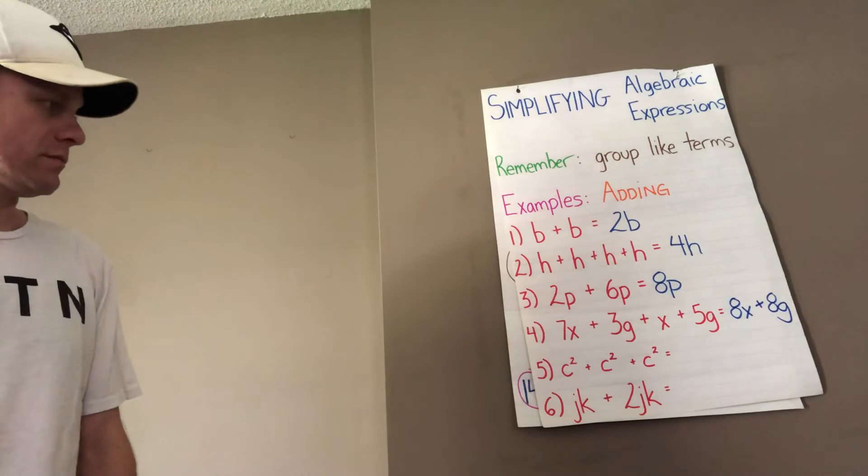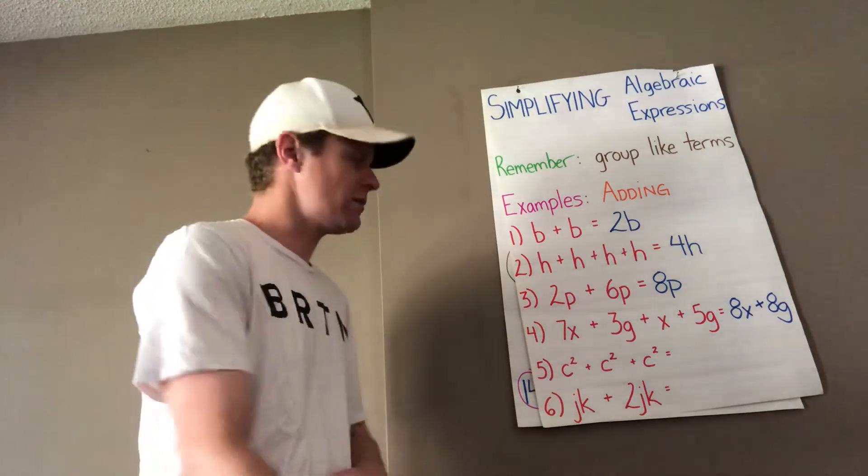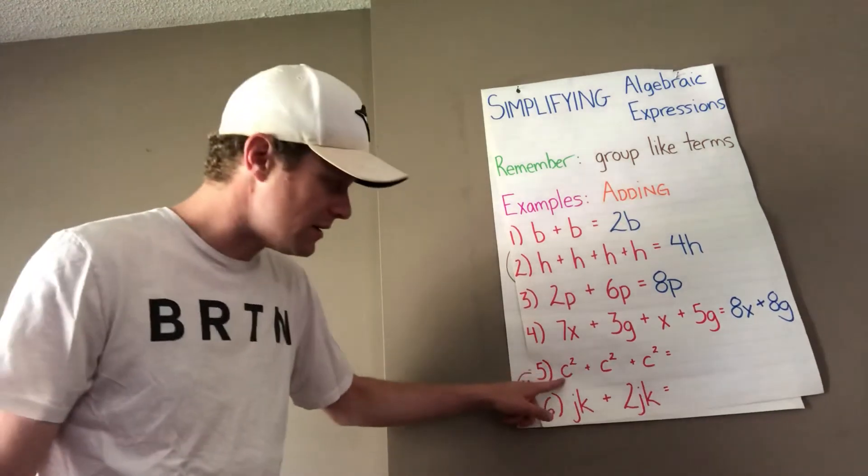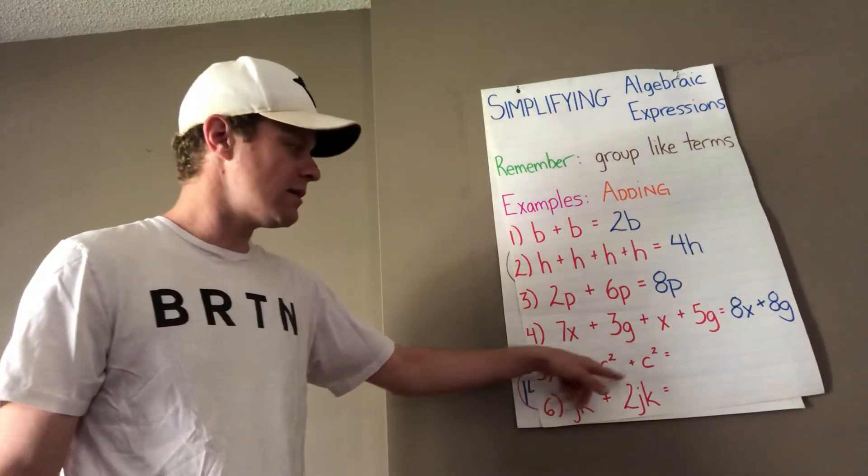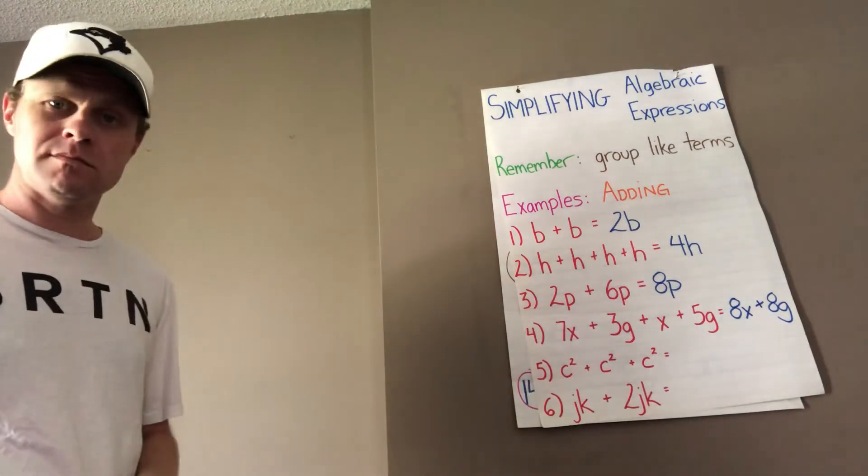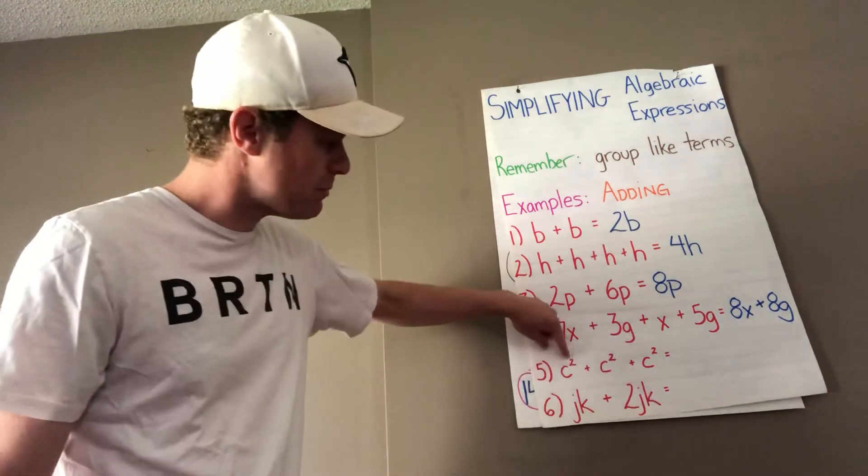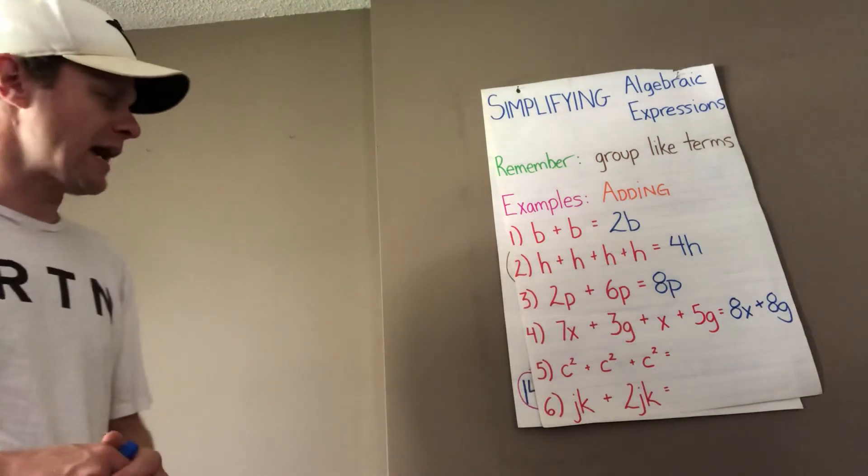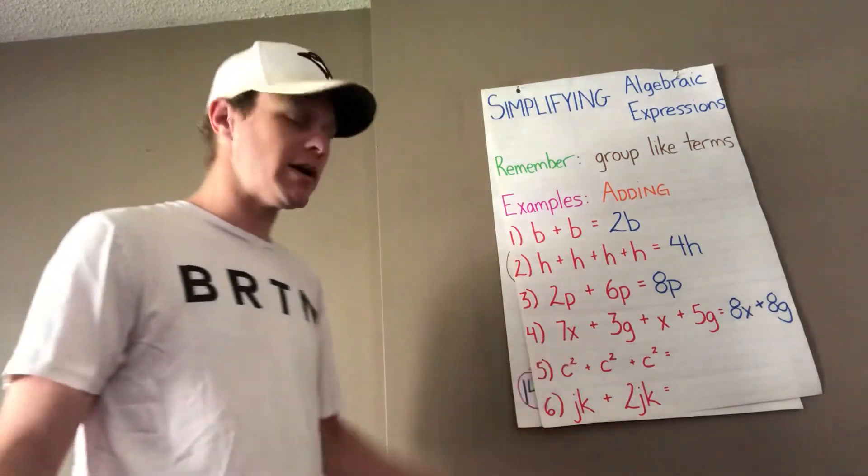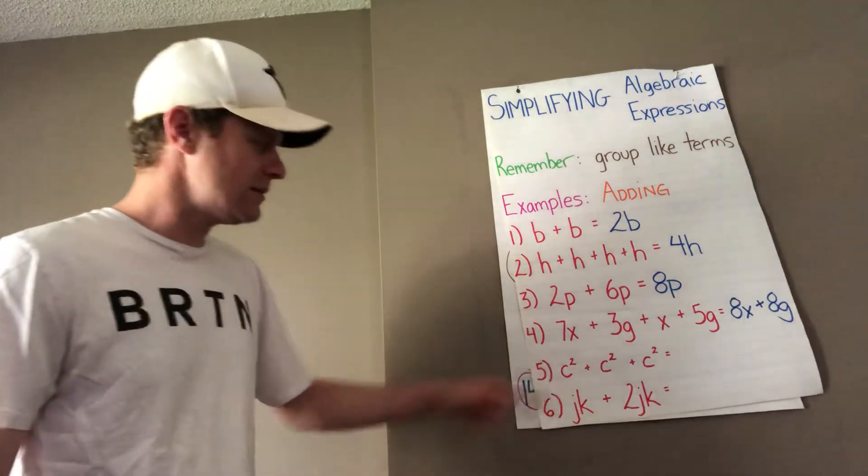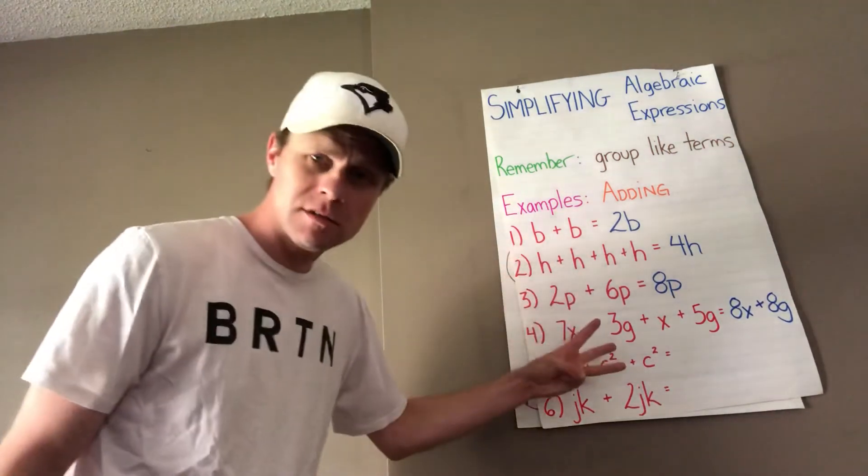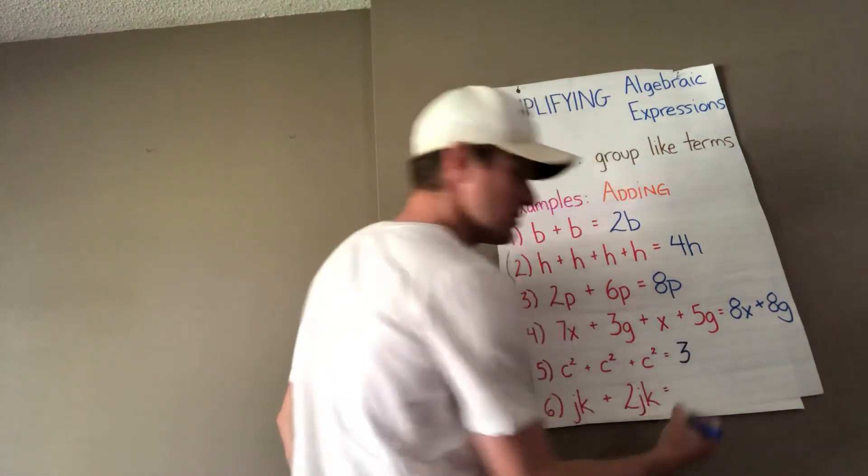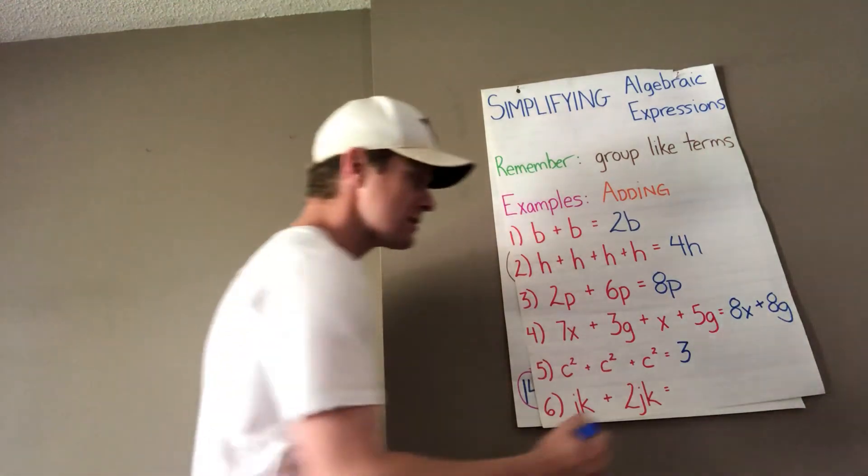Brilliant. So as long as you're grouping your like terms together, you'll be fine. Number 5, c squared plus c squared plus c squared. Even though there's an exponent on each of these, we still do the same thing. They're still like terms, so we're going to add them together. How many c squareds do we have? 1, 2, 3. So our answer is going to be 3c squared.